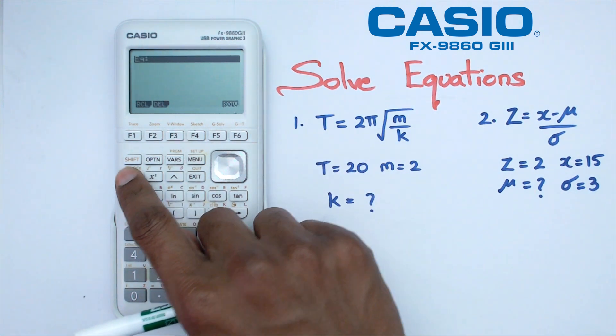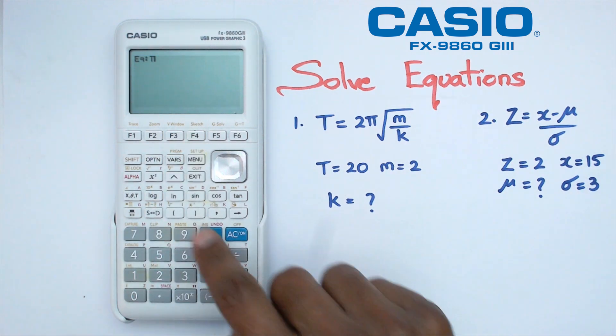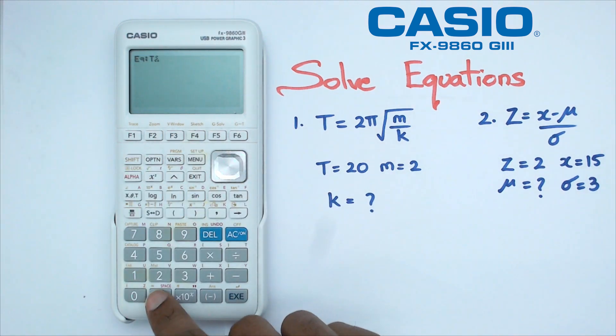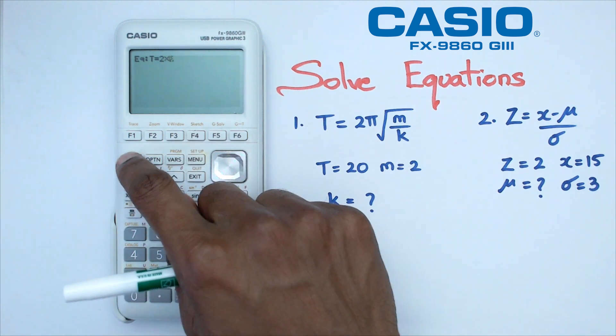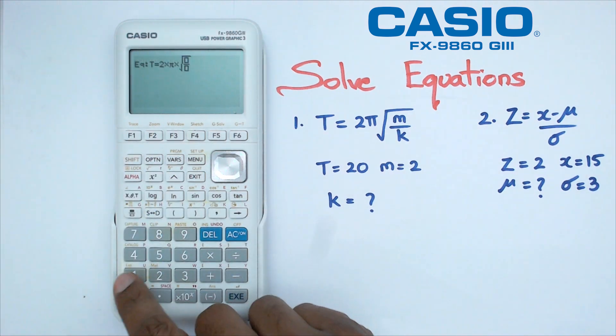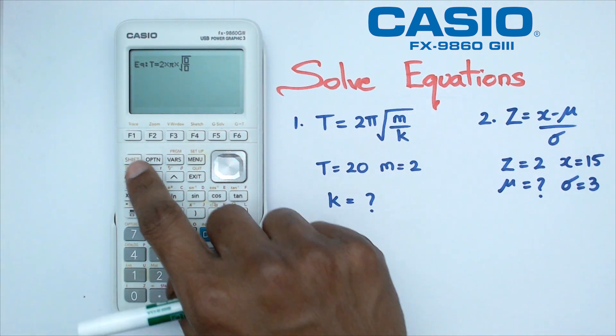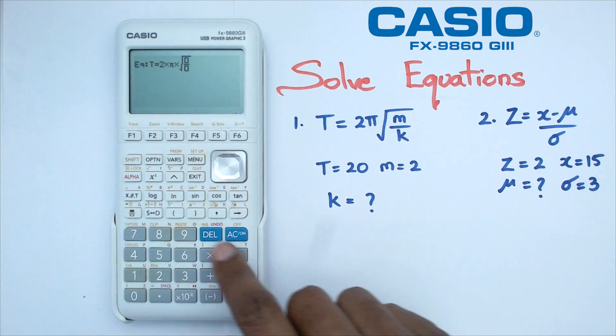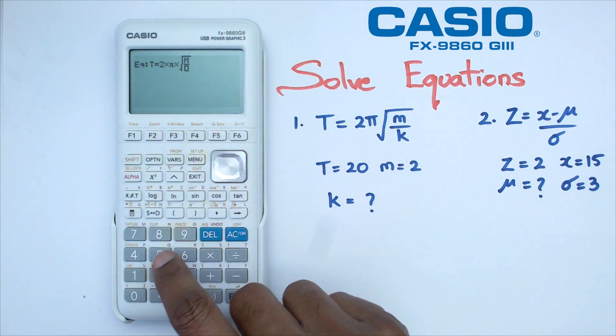I'm going to go alpha t, which is alpha divide, that's going to give me t, and then I've got shift decimal point for equals. Then I've got two times pi, so pi is right there, and I'm going to multiply by square root, and I'm going to put a fraction button here. In the numerator I'm going to go alpha m, that's going to be m right there, and then alpha k right there.